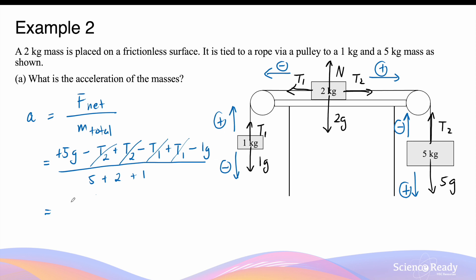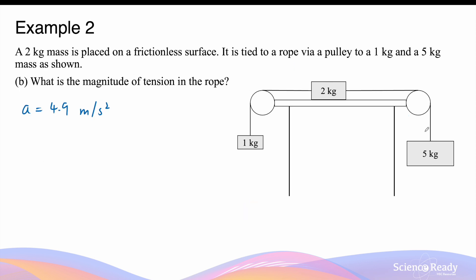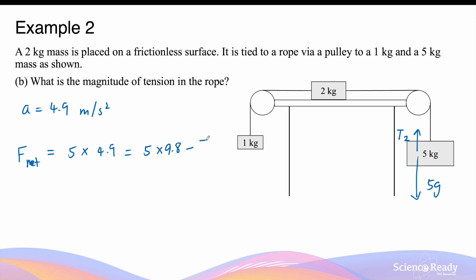As you can see, T1 and T2 cancel each other out in the numerator, simplifying the equation to 4g ÷ 8, which is 4 × 9.8 ÷ 8, equal to 4.9 m/s². For the tension forces, going back to the 5kg mass: its net force equals mass times acceleration, so 5 × 4.9 = 5g − T2, giving T2 = 5 × 9.8 − 5 × 4.9 = 24.5 Newtons.